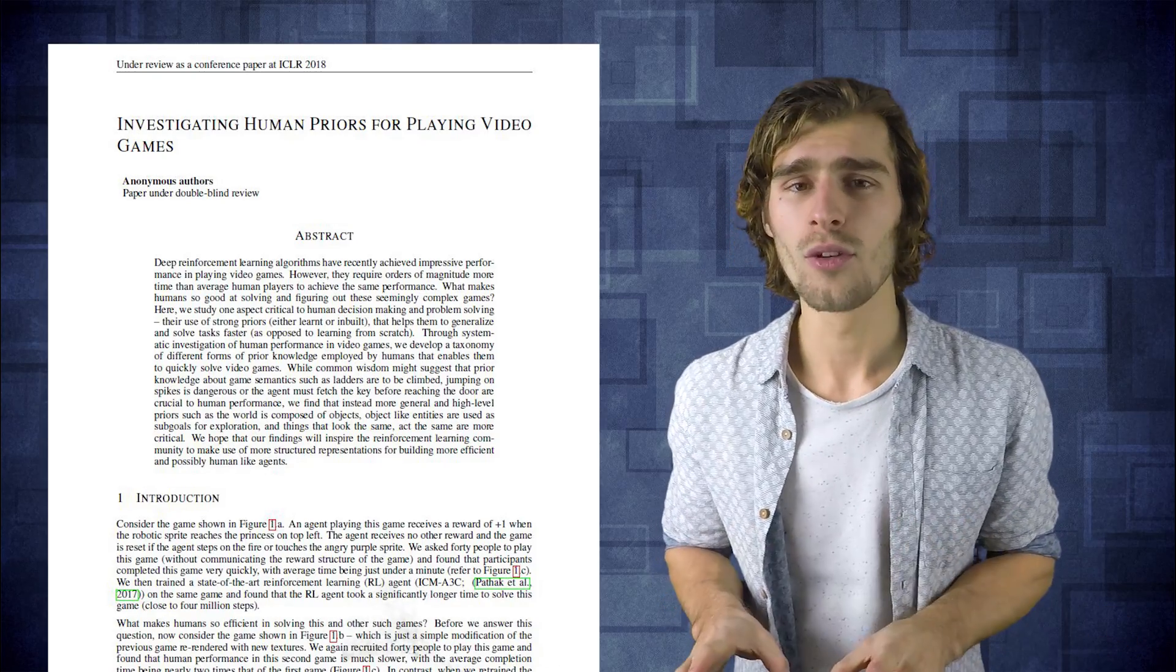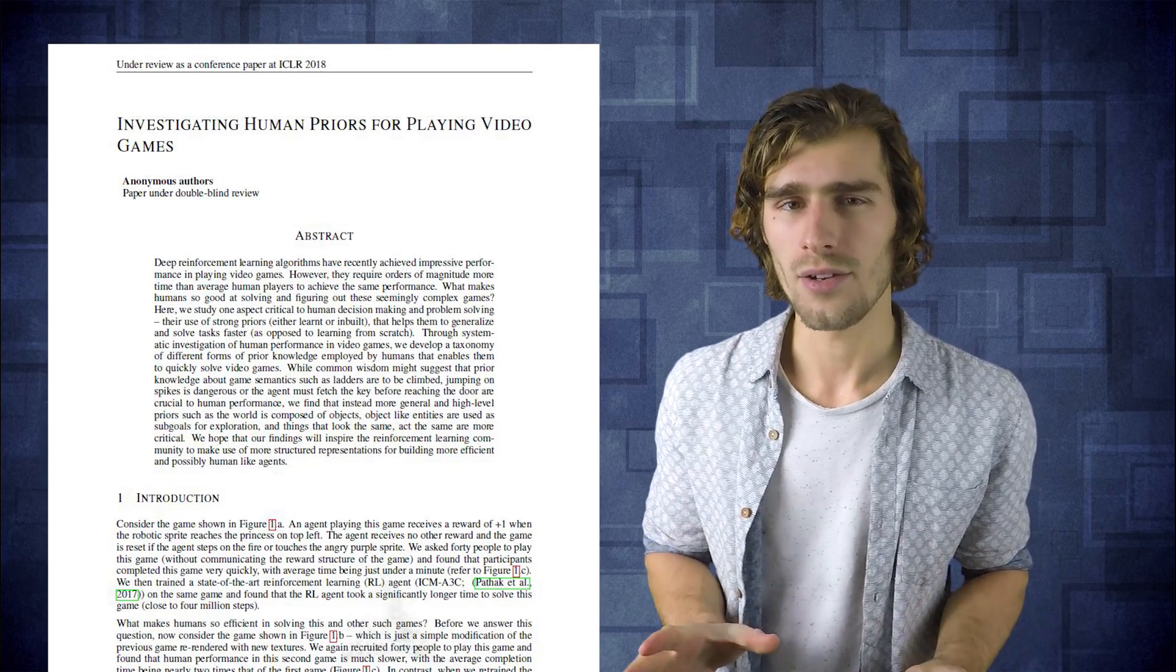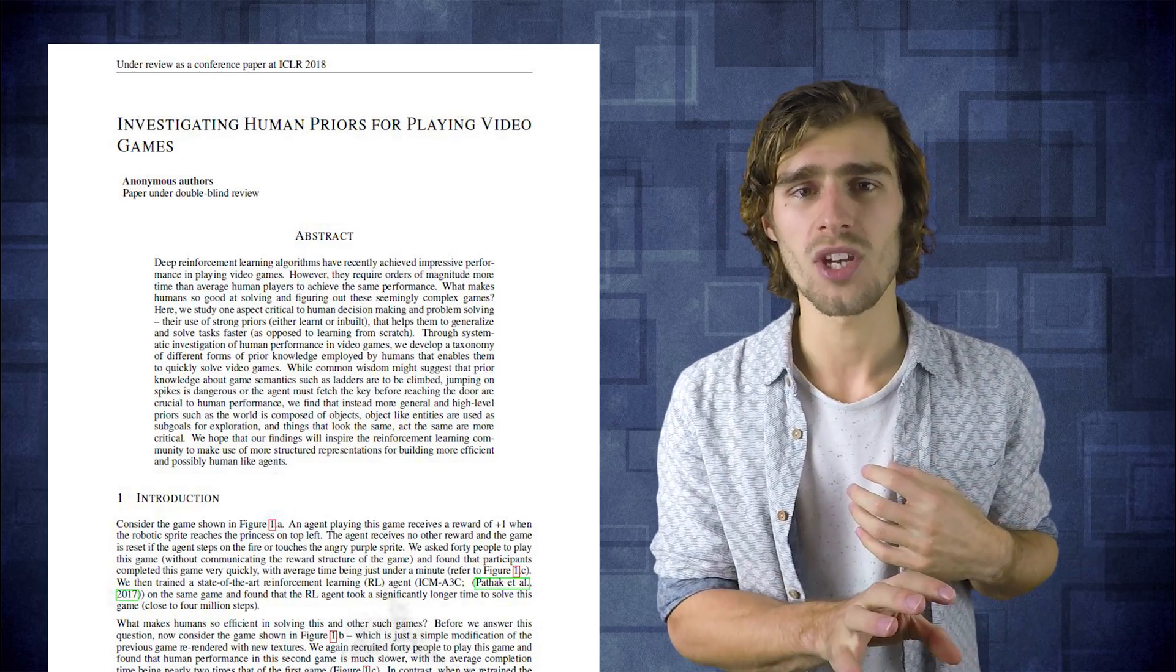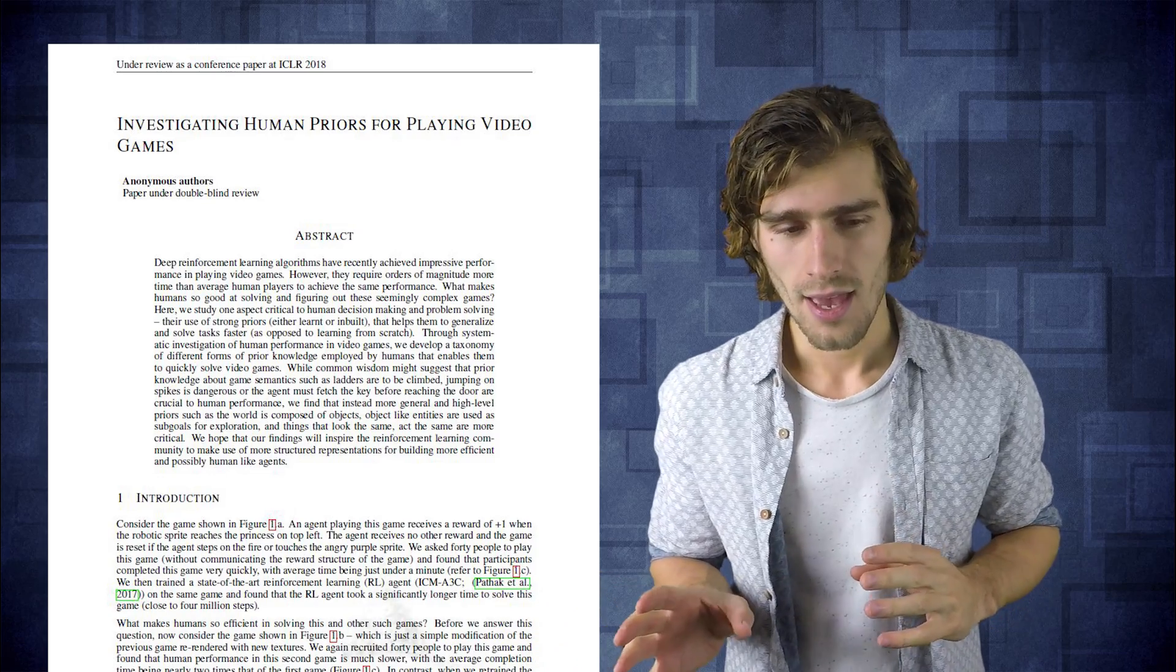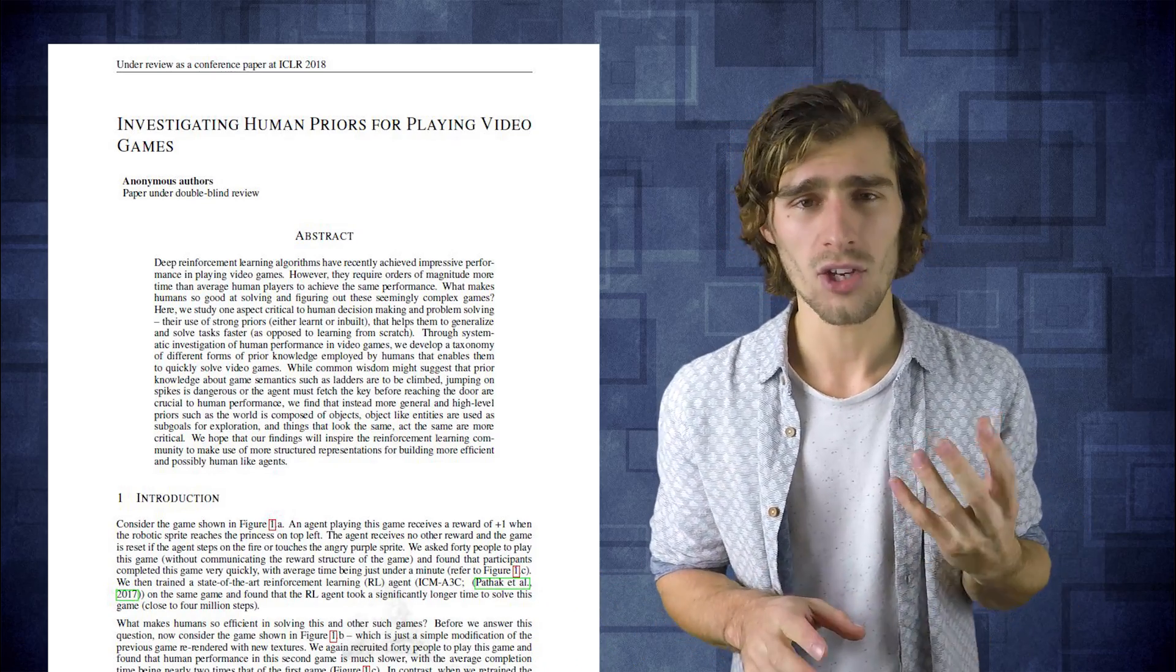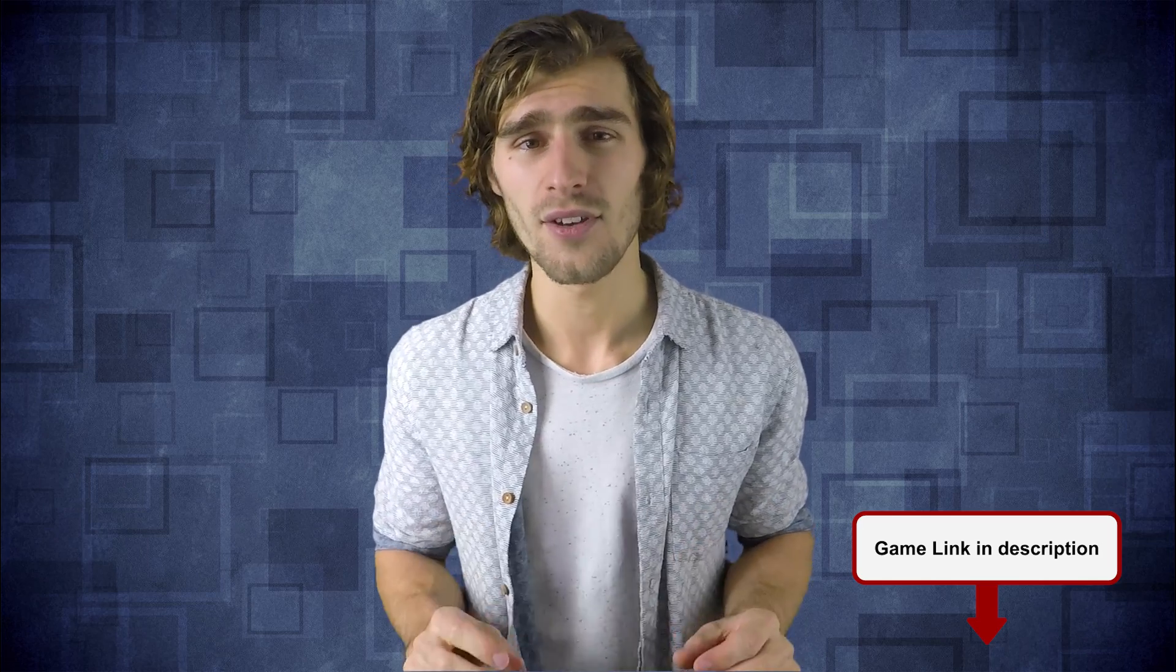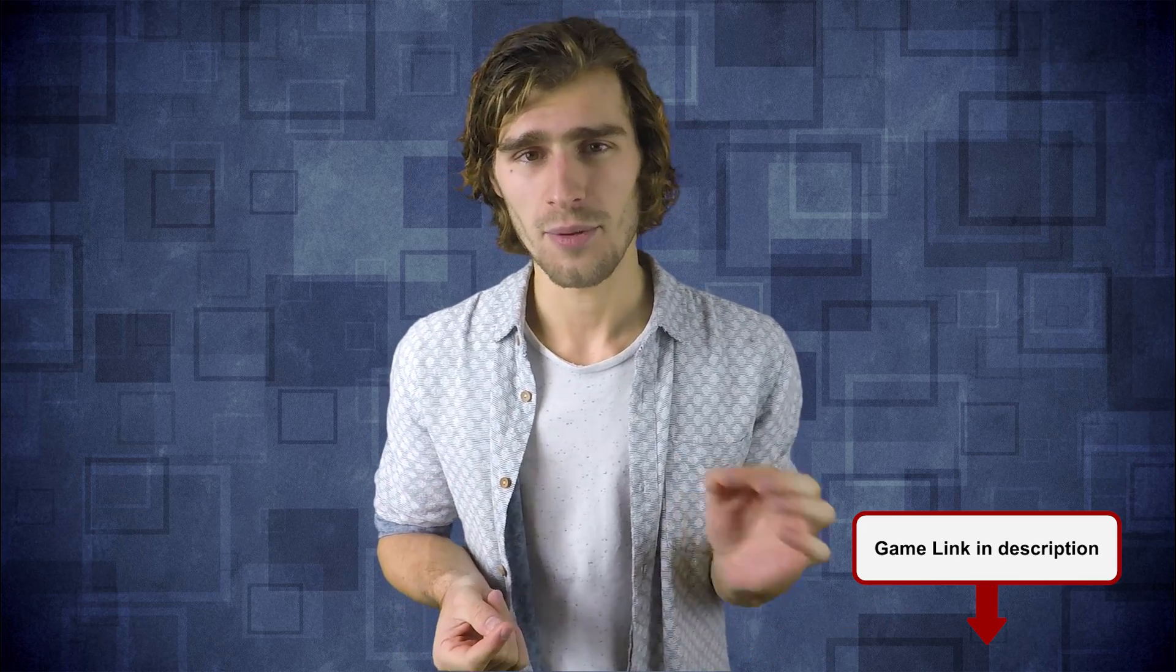In order to test the presence and influence of different kinds of human priors, the researchers took the game but then deliberately replaced some of the game objects with random textures. The idea is that if you do this cleverly, you can actually mask away some forms of prior knowledge and then look at the performance change by human players to figure out which forms of prior knowledge are actually crucial in solving a game like this. Before we go further, I would like all of you to click on the link below and try one of the adjusted game versions to see how difficult it actually is if you are deprived of your prior knowledge. As you'll see, it's not that easy.